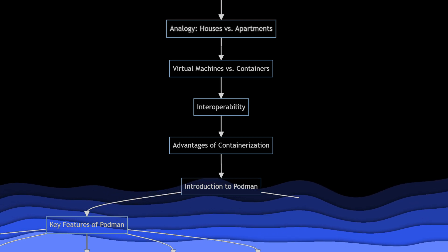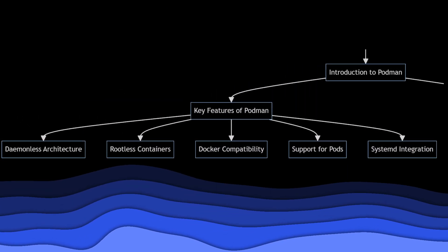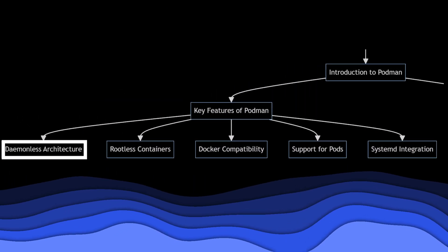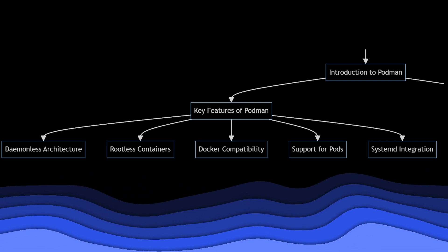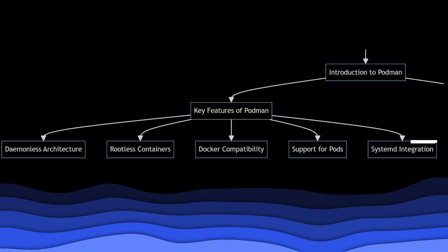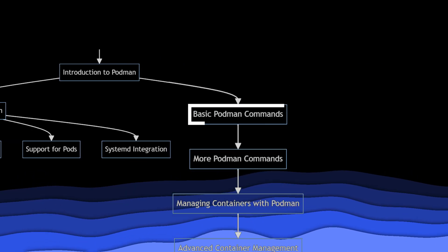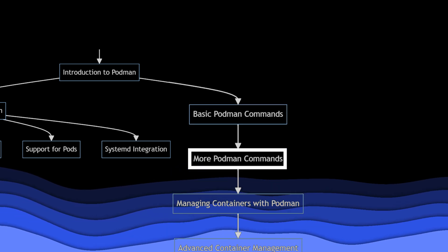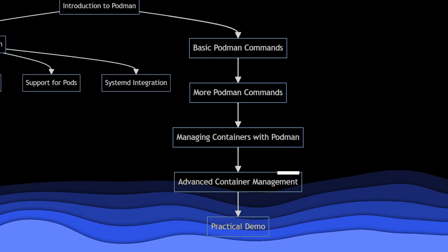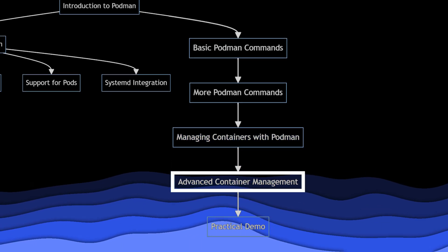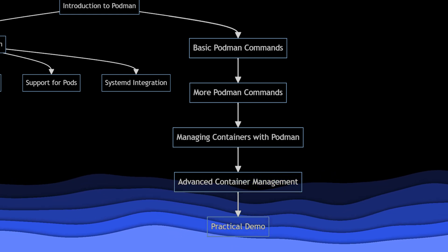After establishing a solid foundation, we'll introduce Podman, the focus of our course, and its key features: daemon-less architecture, rootless containers, Docker compatibility, support for pods, and systemd integration. Following this, we'll dive into basic Podman commands, progressing to more Podman commands, and then to managing containers with Podman. We'll continue with advanced container management techniques. Finally, we'll conclude with a practical demo where you'll apply what you've learned in a hands-on session.